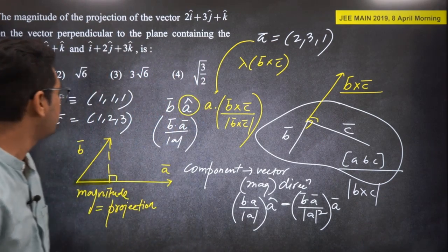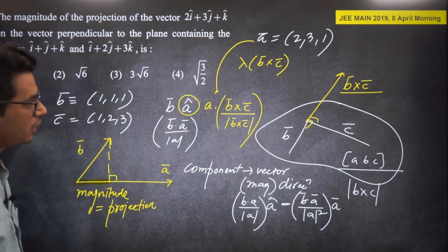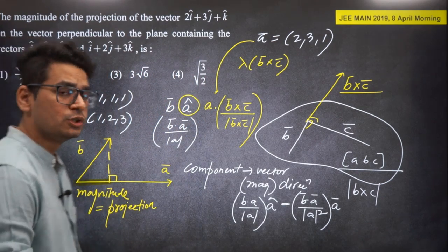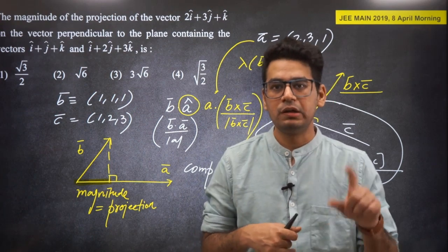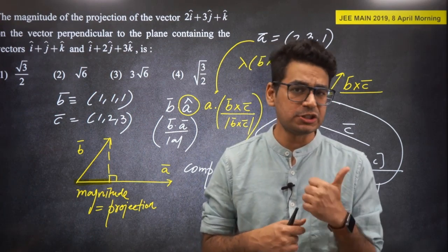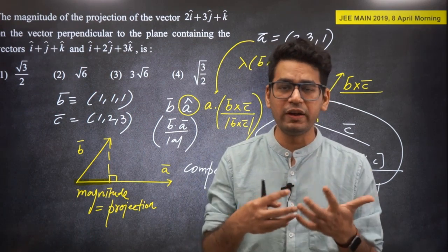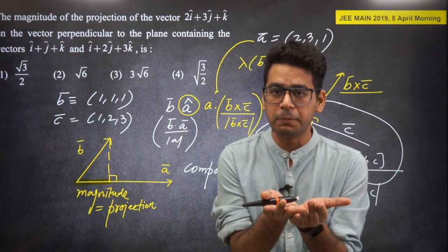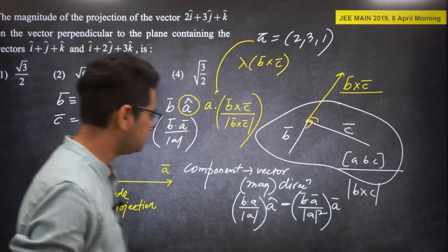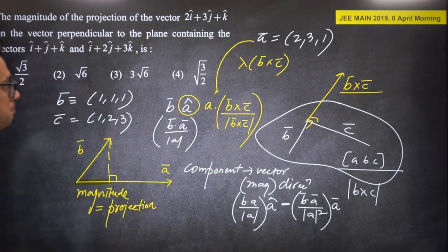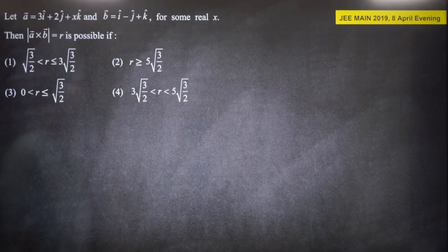I hope the concepts of projection, component, and finding a vector perpendicular to two vectors are now clear. Moving on to the next question.